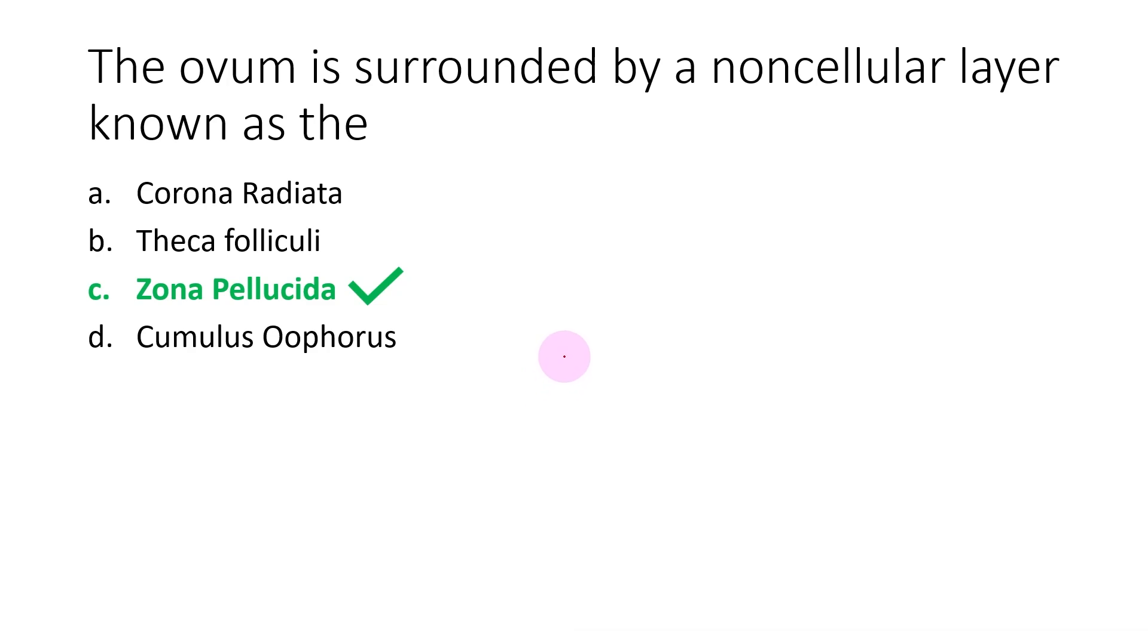Now what is zona pellucida? You need to know what is the oocyte cumulus complex or the cumulus oocyte complex. This is a structure that is released in an ovulation. So let us have a look at that once more.